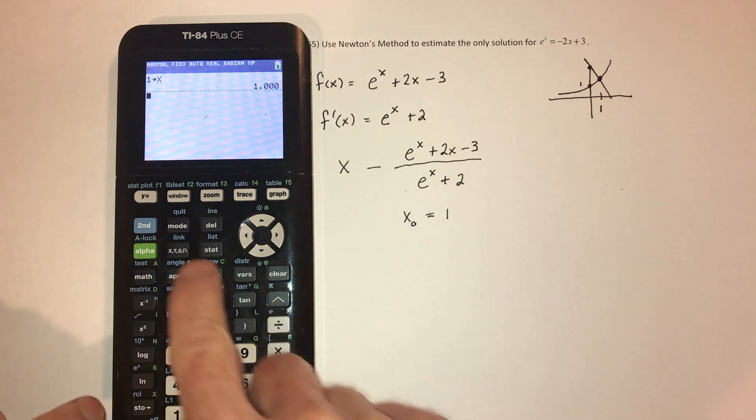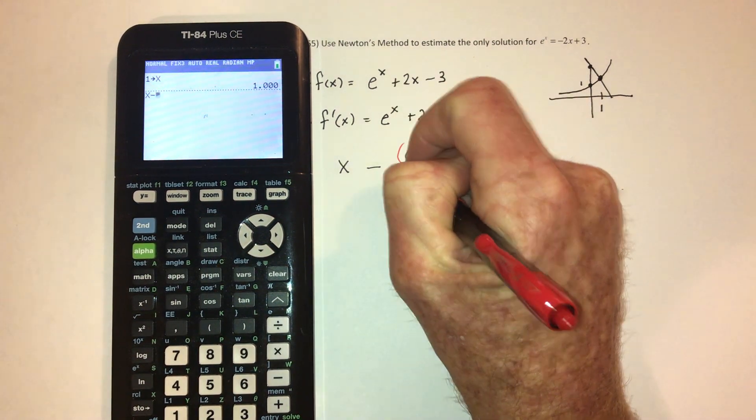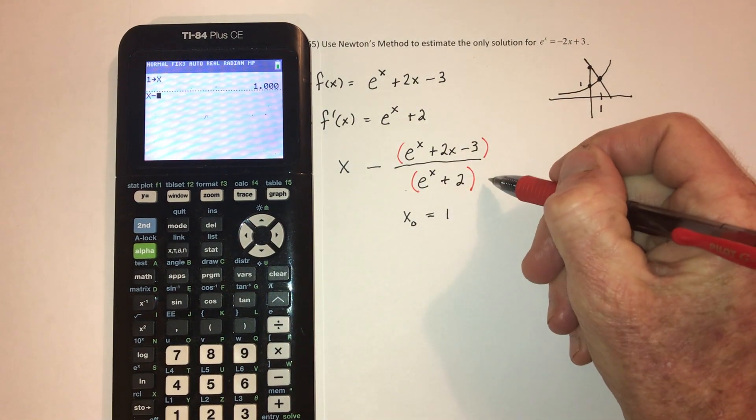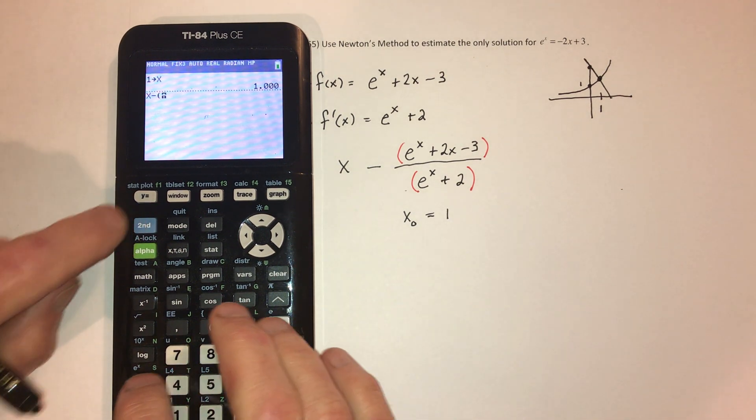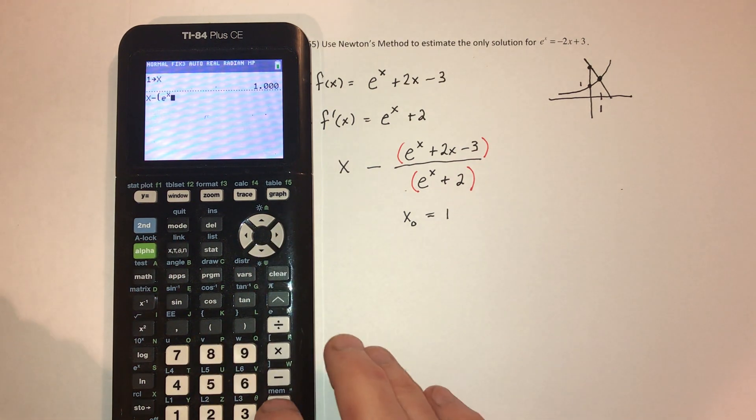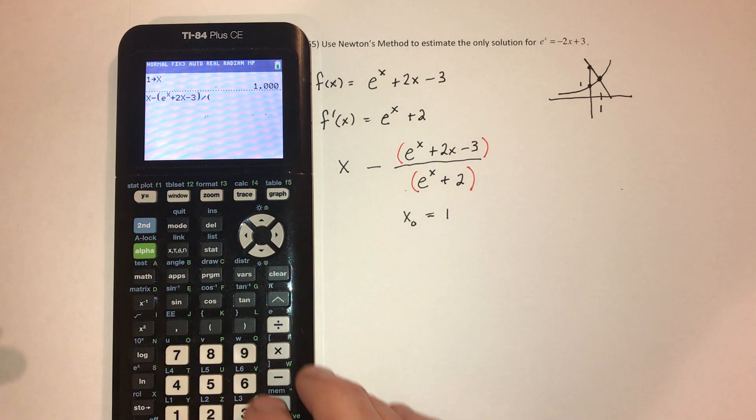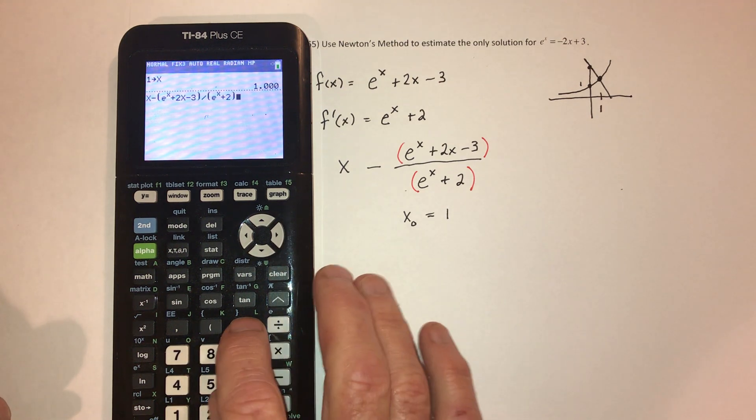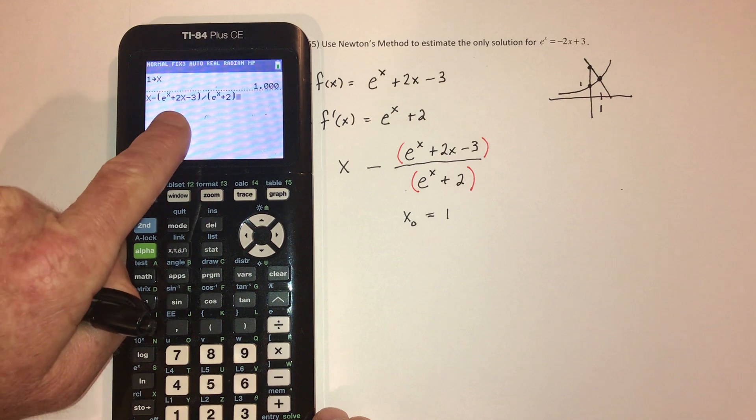Now type in this. x minus, and this should be in parentheses, so the calculator knows this is the numerator, and this is the denominator. So parentheses, e to the x, plus 2x, minus 3, divided by, and parentheses, e to the x, plus 2. And then because I stored x as 1, it's now going to plug in 1.